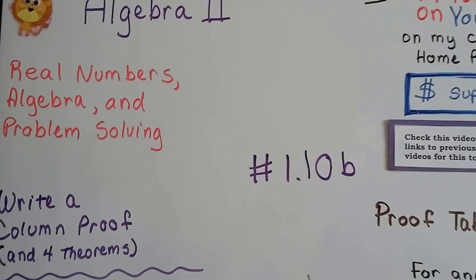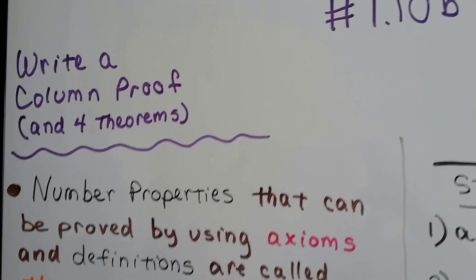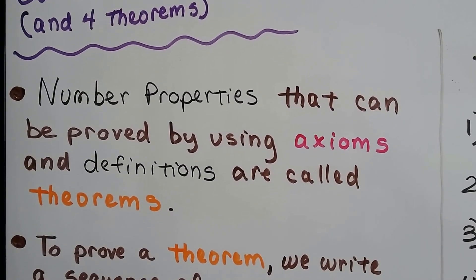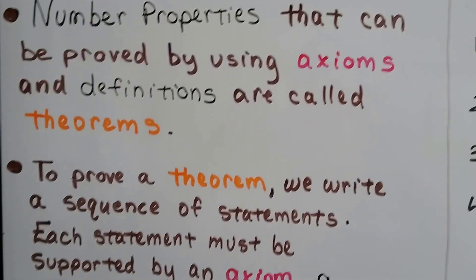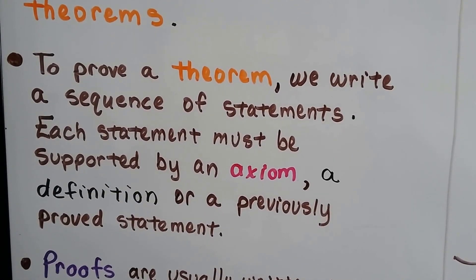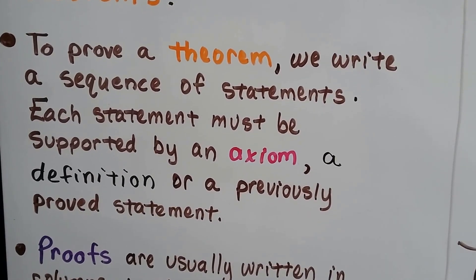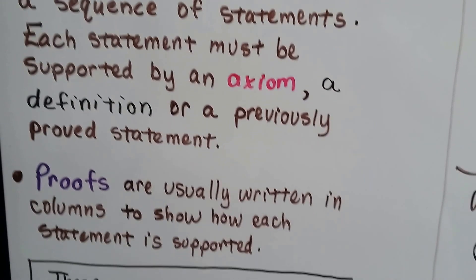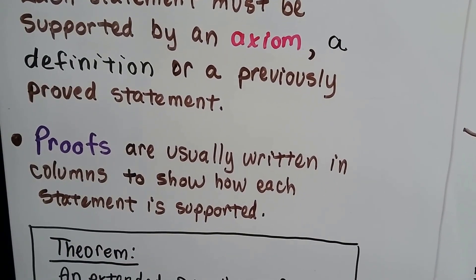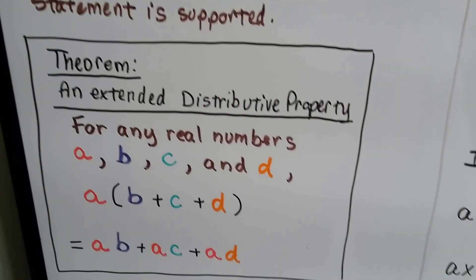Algebra 2, 1.10b — we're going to write a column proof, and I've got four theorems for you. Number properties that can be proved by using axioms and definitions are called theorems. To prove a theorem, we write a sequence of statements. Each statement must be supported by an axiom, a definition, or a previously proved statement. Proofs are usually written in columns to show how each statement is supported.